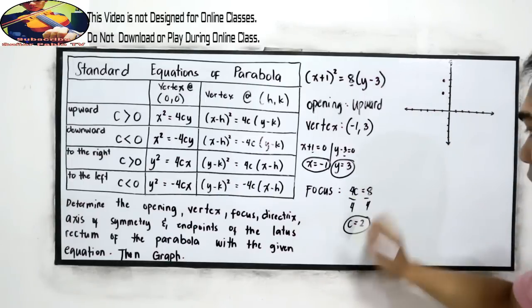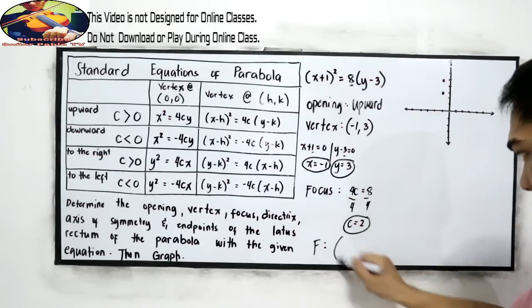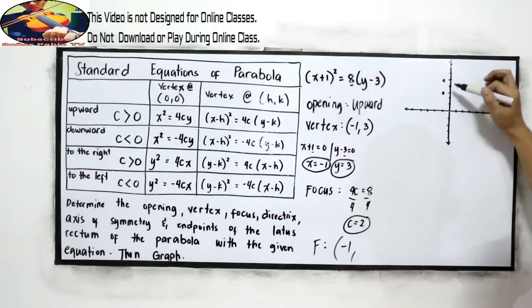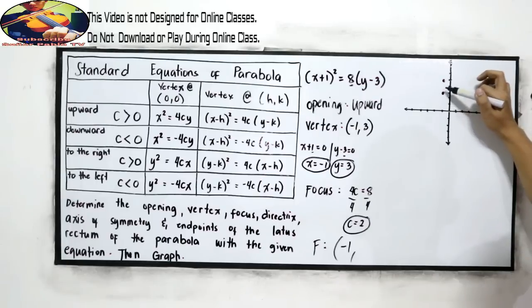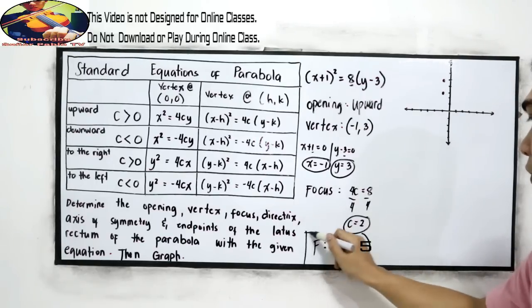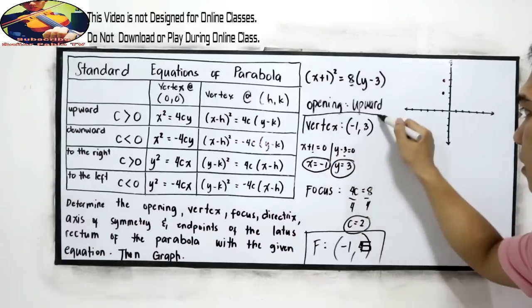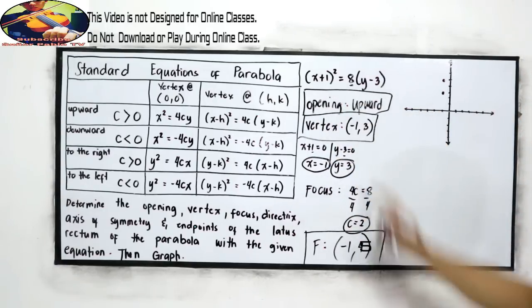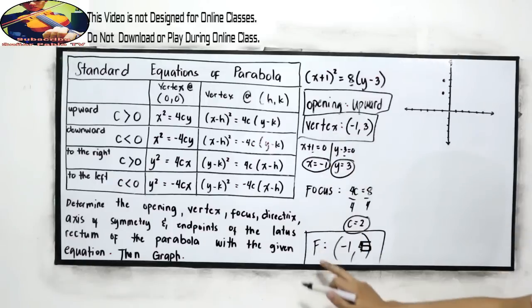So our focus is negative 1, then our y is 1, 2, 3, 4, 5. This is our focus. Let us box our final answers. Opening, vertex, and focus.